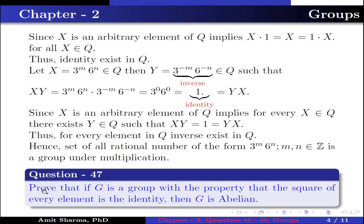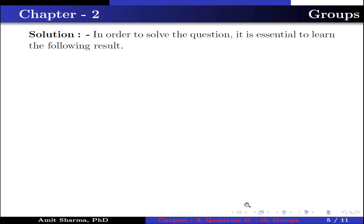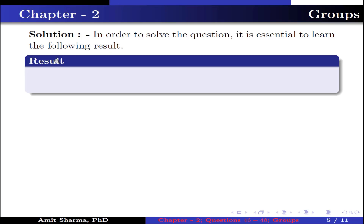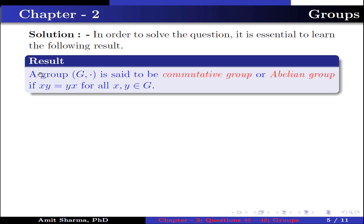Question number 47: prove that if G is a group with the property that the square of every element is the identity, then G is abelian. In order to solve this, it is essential to recall the following result: a group G under multiplication is said to be a commutative or abelian group if xy = yx for all x, y belonging to G.